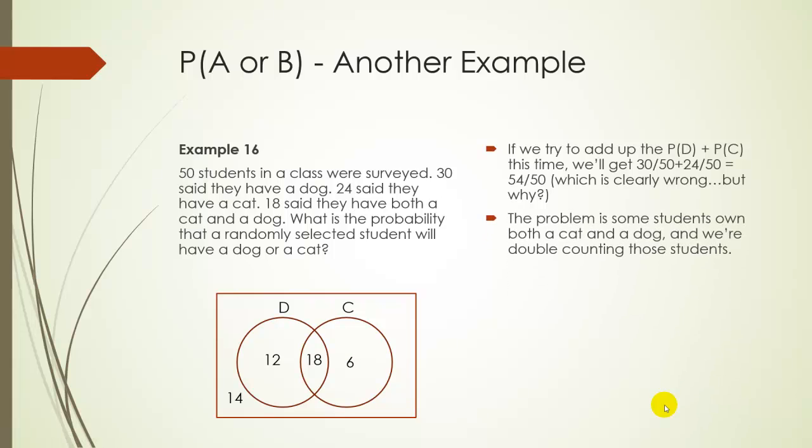Alright, so let's do the calculation. The problem is that if we were just to add together the dog and the cat people together, we're going to be double counting the 18 in the middle. So we already know the answer is 36 out of 50. But if we just wanted to do it by adding, then we could just add the dog people together, the 30 people, add the cat people together, and subtract off 18 because we don't want to double count these 18 people since they're in both groups.